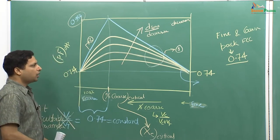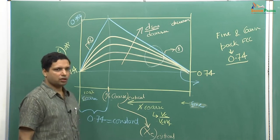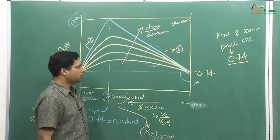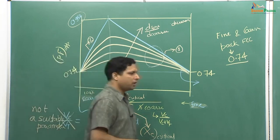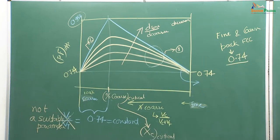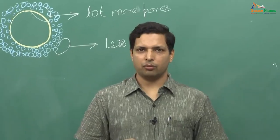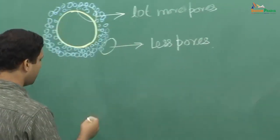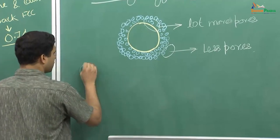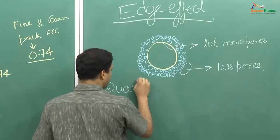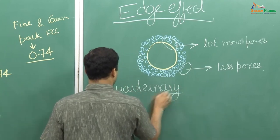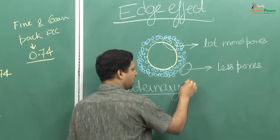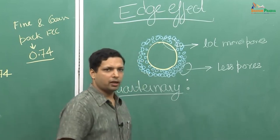This is how bimodal grain size particle size distribution and its packing looks. Now let us move on to something more complicated. So far we have looked at bimodal distribution. Now, what about a quaternary distribution? We will not get into detail, but just look at some results people have obtained for quaternary packing.